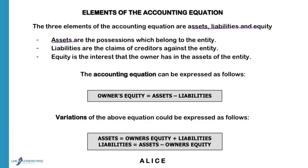Assets are the possessions of the business that belong to the business. Liabilities are the claims of creditors or financial institutions against the entity because the entity owes them money. Equity is the interest of the owner in the business, his interest in the assets of the entity.